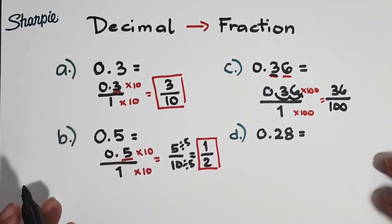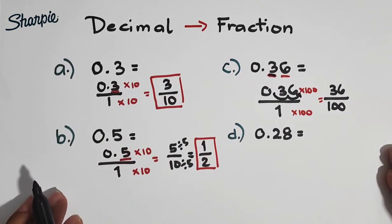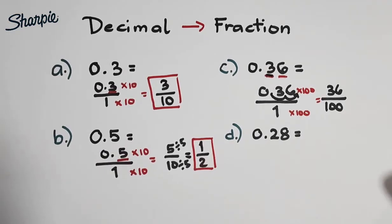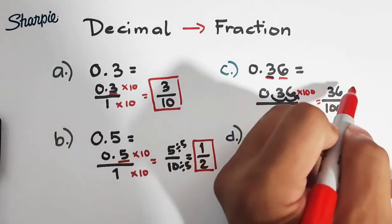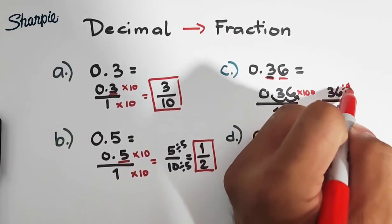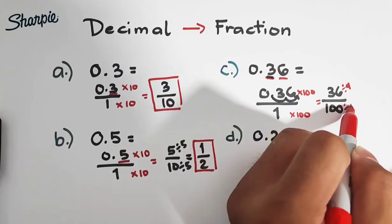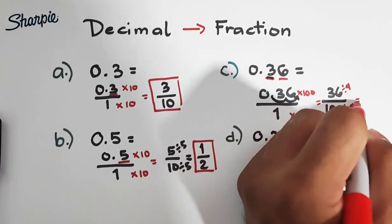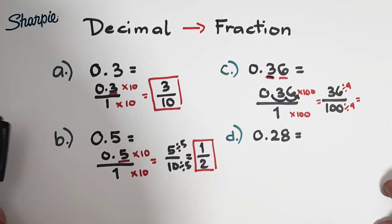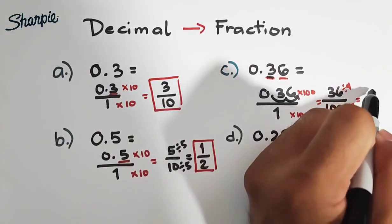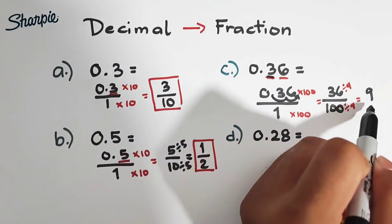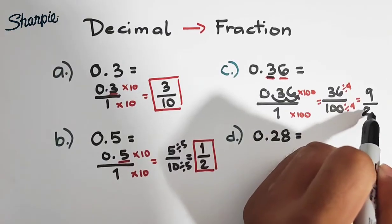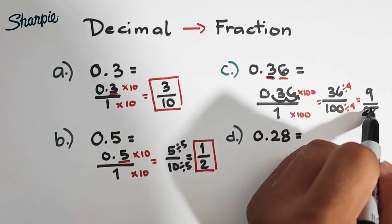And in this case, yung ating 36 over 100, they're both divisible by 4. So we can divide this by 4, divide by 4, and also divide 100 by 4. So we can have this answer. 36 divided by 4 is 9. And then, 100 divided by 4, this is also equal to 25.